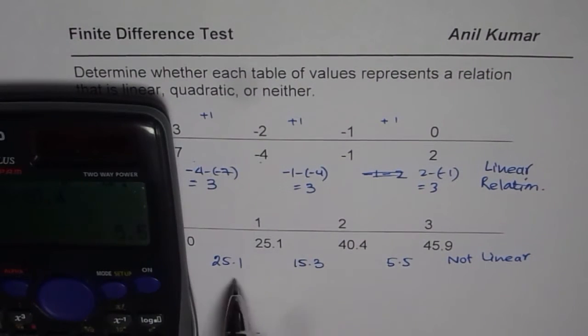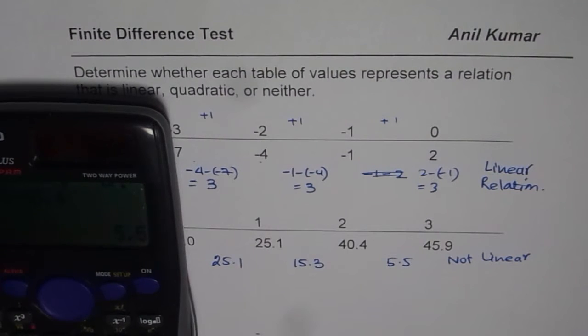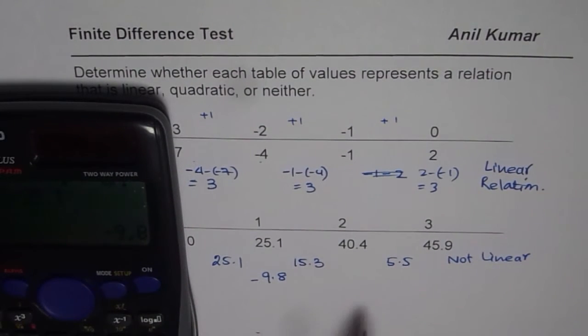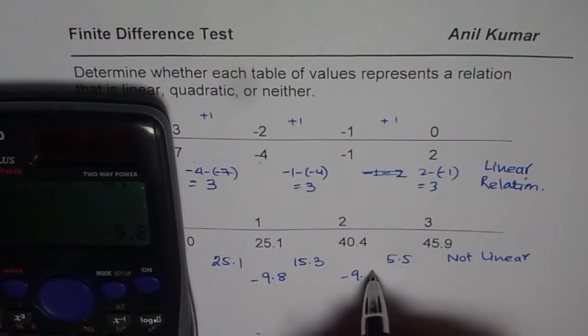In that case, we will find the second difference. That is to say, we will do 15.3 minus 25.1. That gives us a value of minus 9.8. Now, let us do 5.5, take away 15.3. And that is equal to, again, minus 9.8.